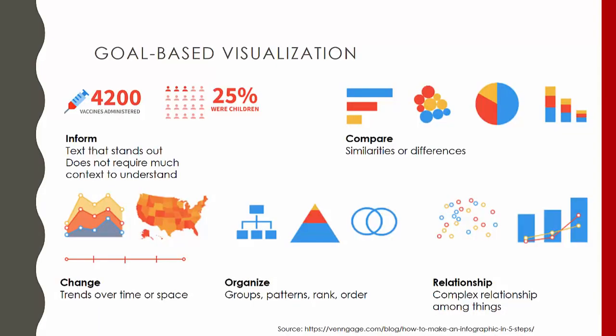For example, if you are trying to inform your audience, you will use large text, whereas if you want to show change or trends within your data, you will use a timeline or line chart. More information on choosing a chart is available at the links at the end of this video.